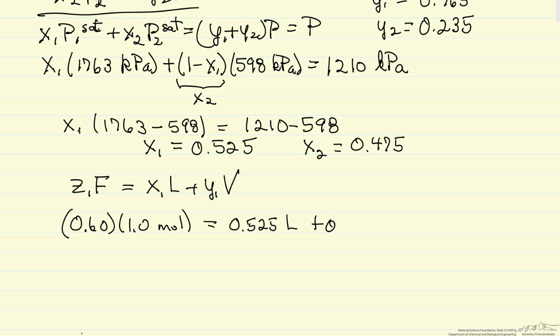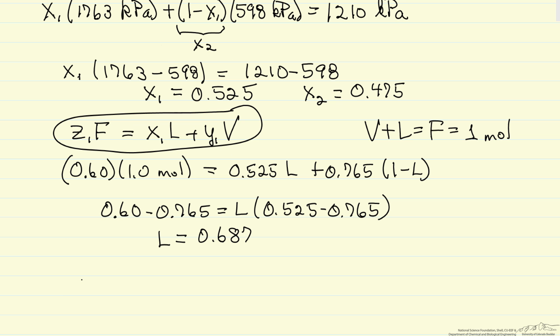Then I calculated Y1 times V, and V of course is 1 minus L because I picked the basis of 1 mole. V plus L equals the feed, 1 mole. Remember this equation is just a mass balance that says the amount of component 1 entering is equal to the amount of component 1 leaving. I can rearrange this equation to solve for L. This says we have 69% liquid, the effluent from the flash, 31% vapor. We calculated for the liquid X1 to 2 significant figures is 0.53, Y1 is 0.77, and so we have the compositions and we have the fractions for this flash calculation.